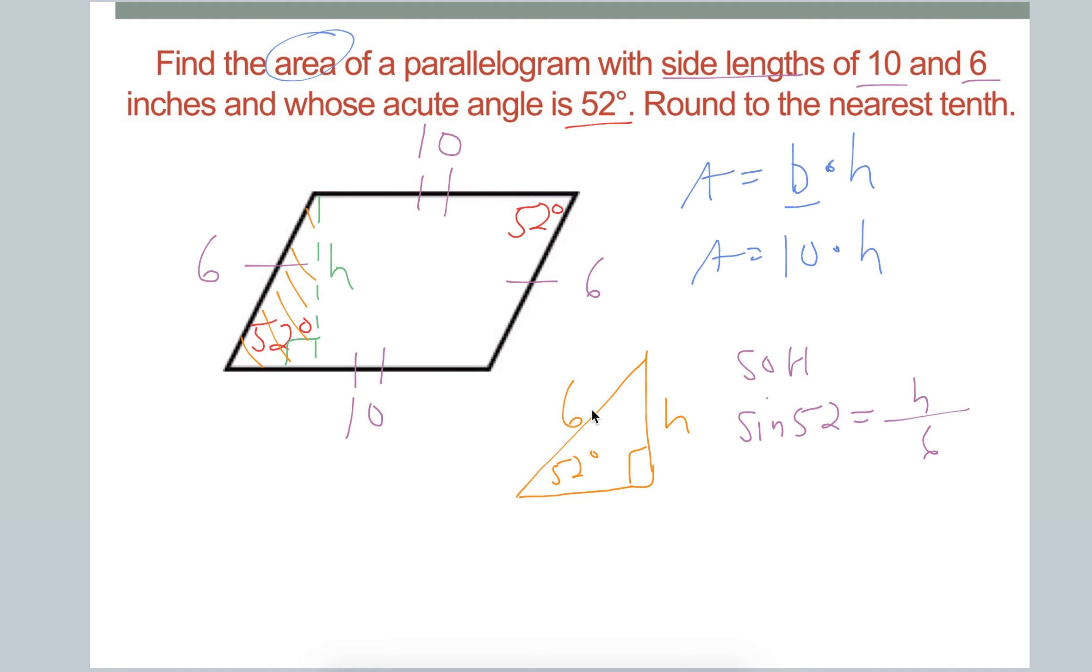And then to solve for H, do some algebra. We can multiply both sides by 6 so that the 6 is canceled. You get H equals 6 sine 52. So type that into your calculator. Do not forget, this is a big thing here. Make sure your calculator is in degree mode and not radians. So H is about 4.728.